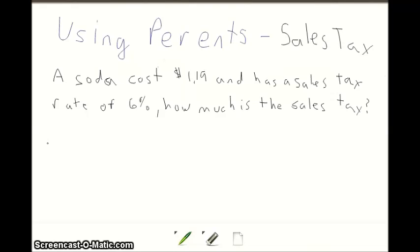We're given 6%, and percent always goes over 100, so we have 6/100. The $1.19 was the total cost of the soda, and the sales tax is part of that, so the $1.19 goes on bottom.